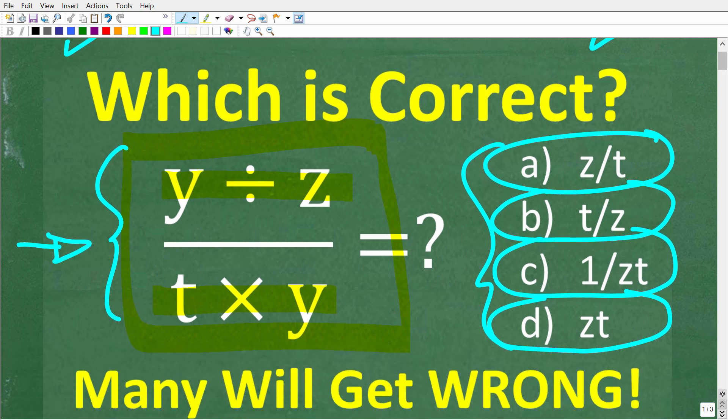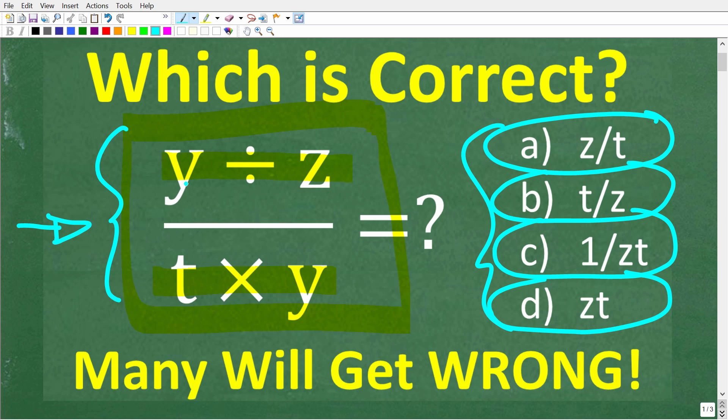Alright, so once again, we have this variable expression y divided by z all over t times y. So what is this all equal to? Well, one of these is the right answer. And let's see the correct solution right now.